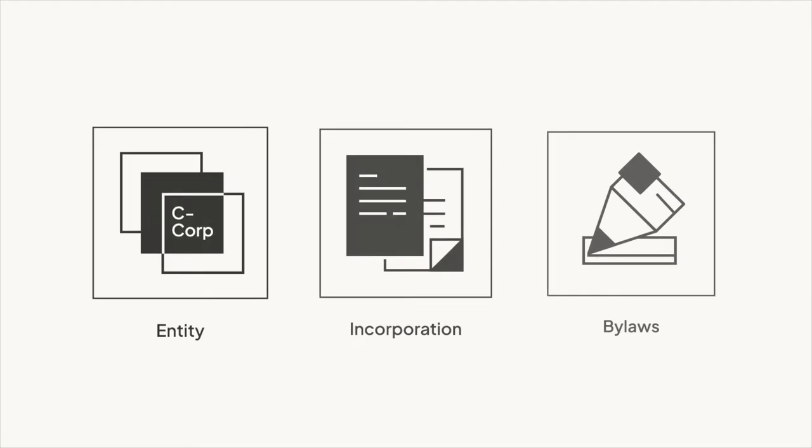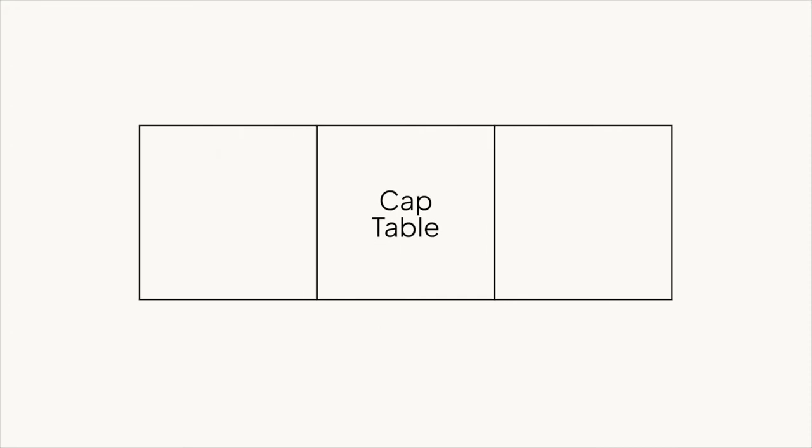So let's say you're starting a company. Before you can do the fun stuff like building a team and a product, you have to do a bunch of the other stuff — boring logistical stuff. You've got to choose an entity type, you've got to legally create your company, and most importantly for this course, you've got to create your company's cap table.